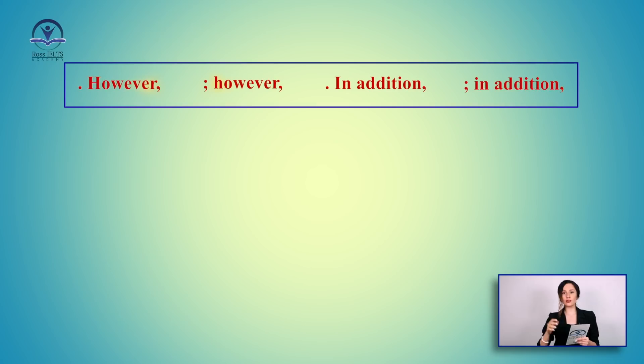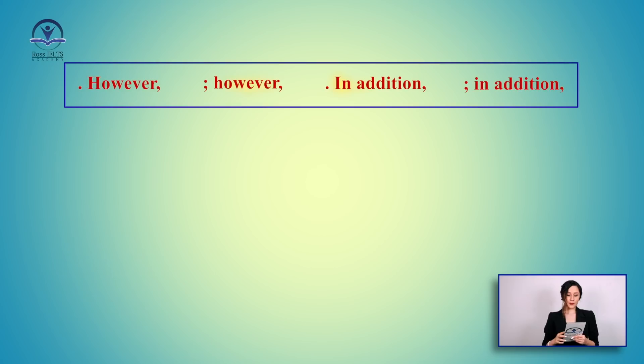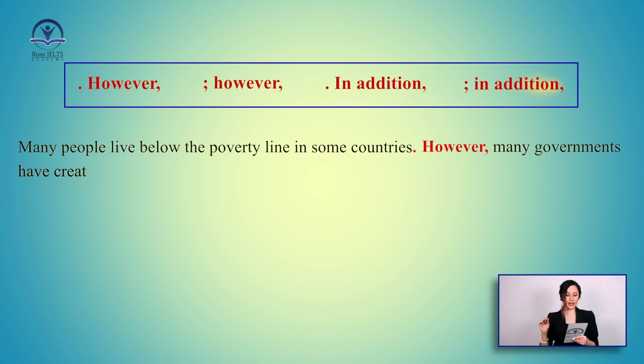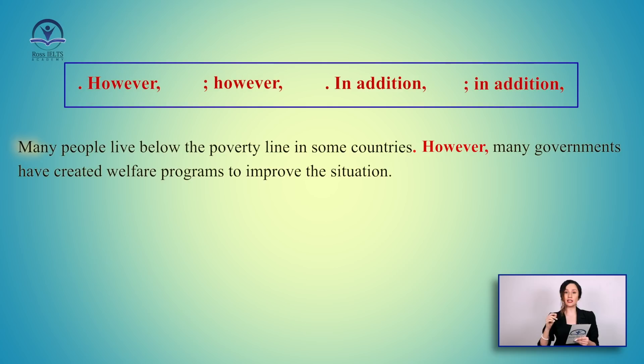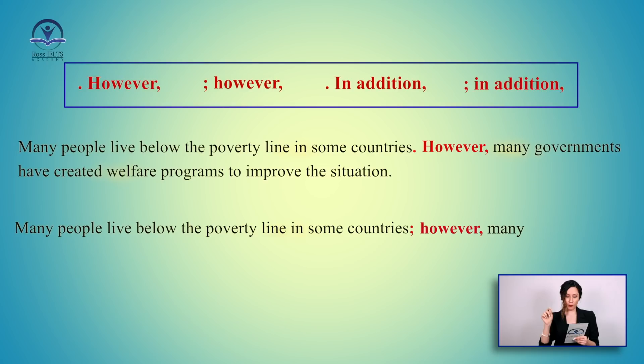For example: 'Many people live below the poverty line in some countries. However, many governments have created welfare programs to improve the situation.' Now if I want to use 'however' in the middle of the sentence: 'Many people live below the poverty line in some countries; however, many governments have created welfare programs to improve the situation.'